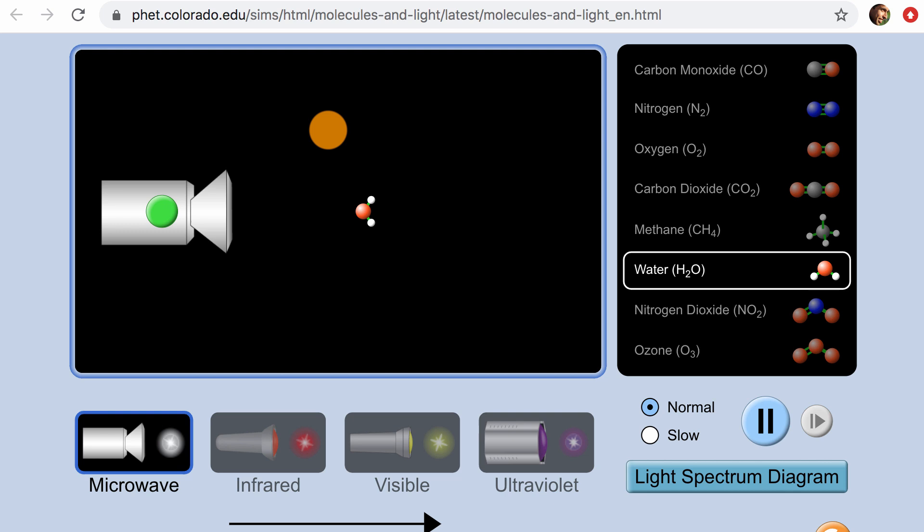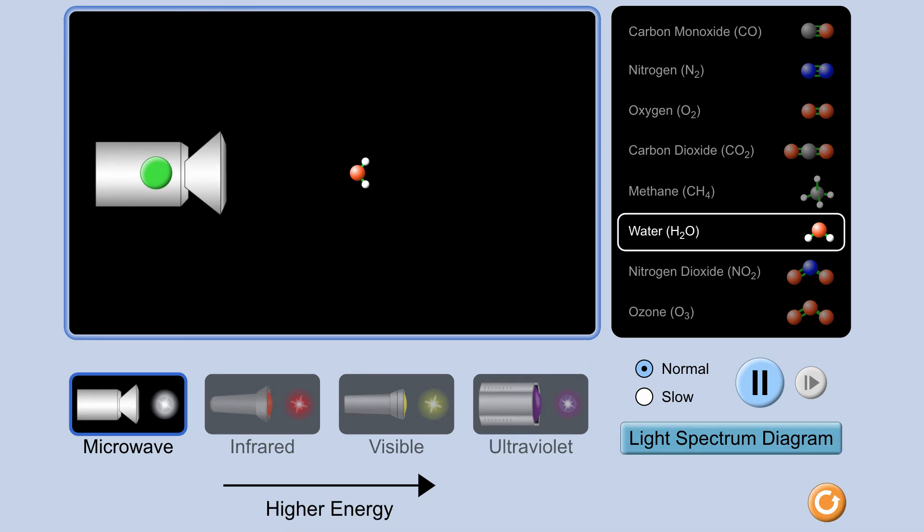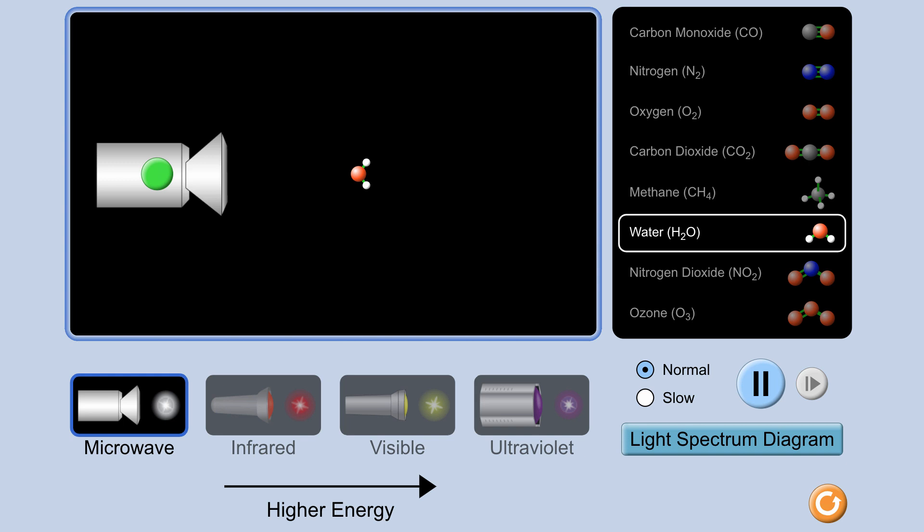And so what I'm going to do to give us an intuition here is use the PHET simulator by the University of Colorado. I encourage you to go to this URL and try it out for yourself. But you can see what the simulator does is it allows us to essentially see how different wavelengths of electromagnetic radiation can interact with matter, in this case, various molecules.